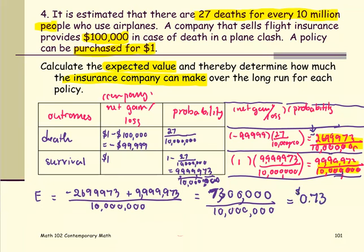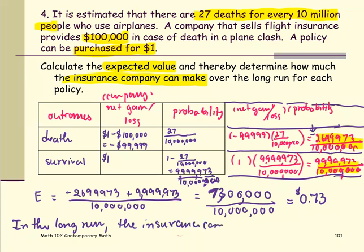On the positive side, for the company, this number means that in the long run the insurance company can make 73 cents for each policy.